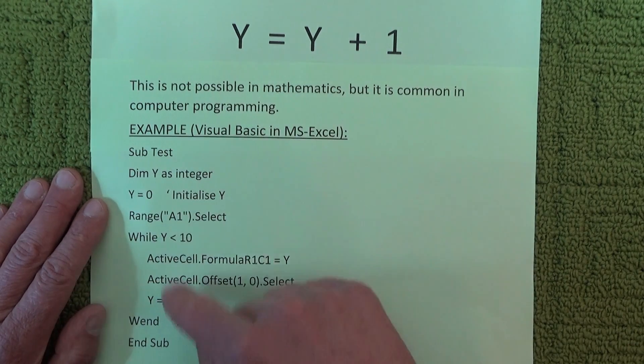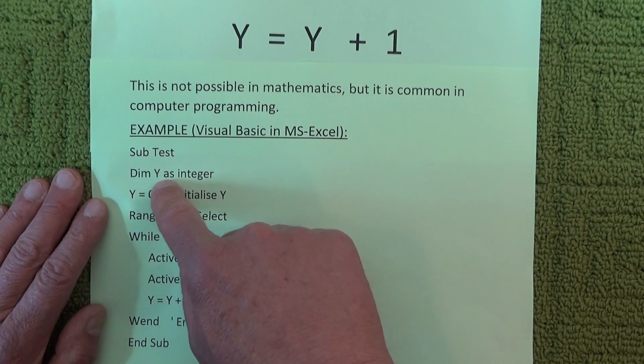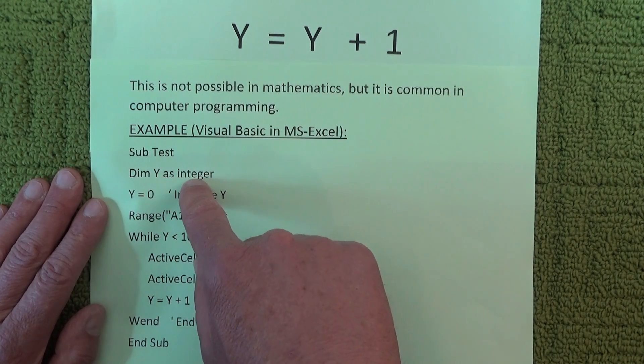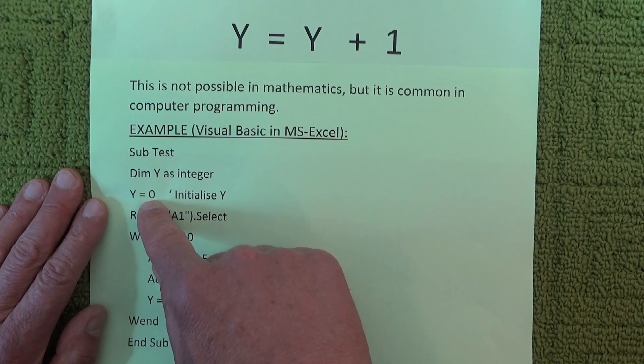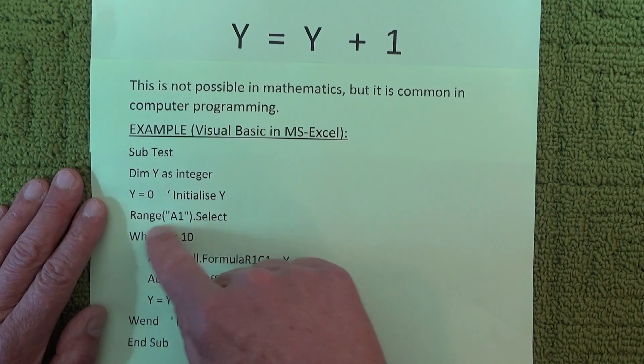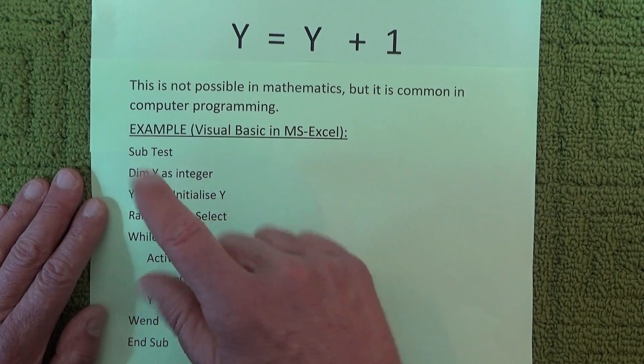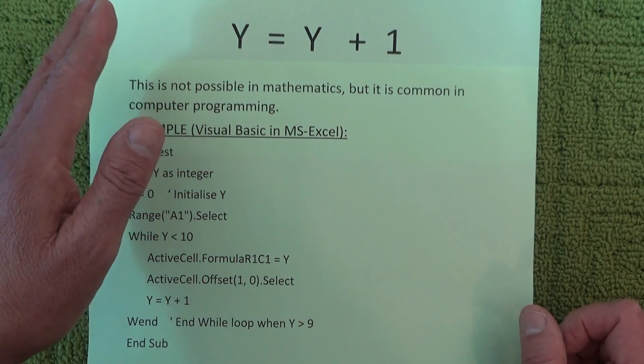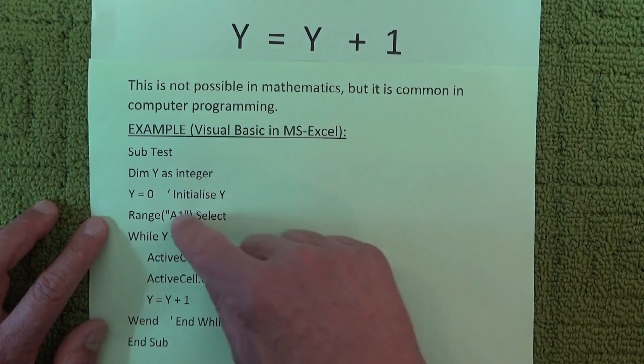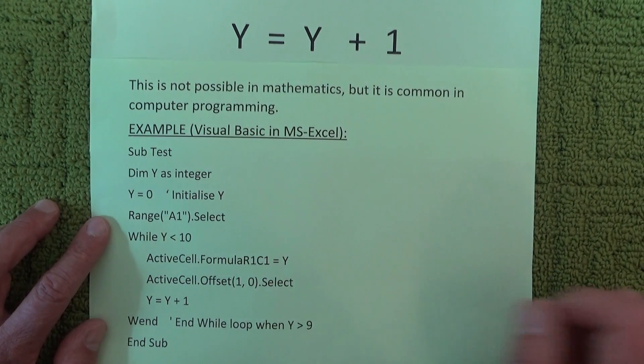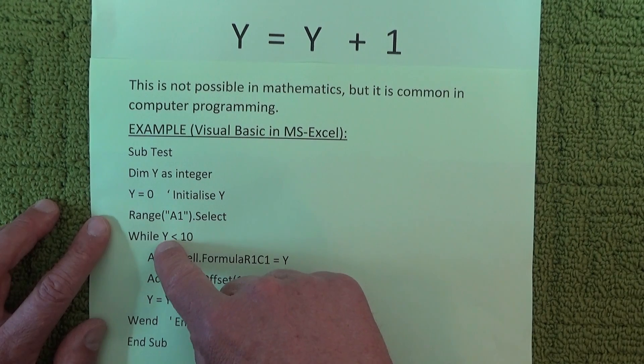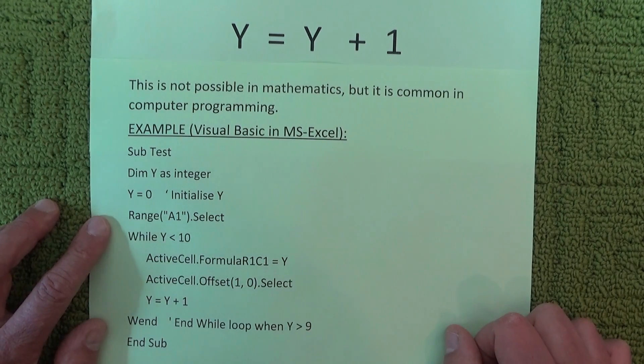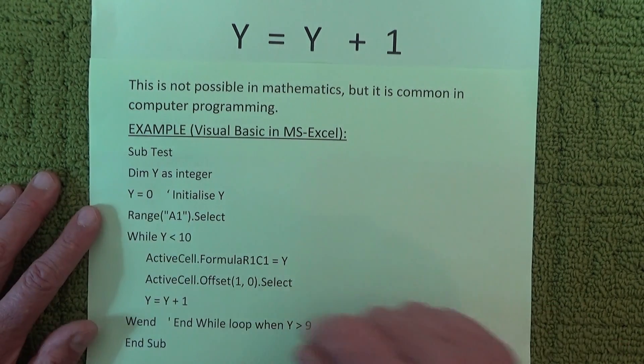So with this code then, if we just follow Y through, first of all we tell the program that Y is an integer which is a whole number. We initialize it and tell them that it's 0 to begin with. We select range A1 which is the top left hand corner of Excel, that top left hand corner cell A1.